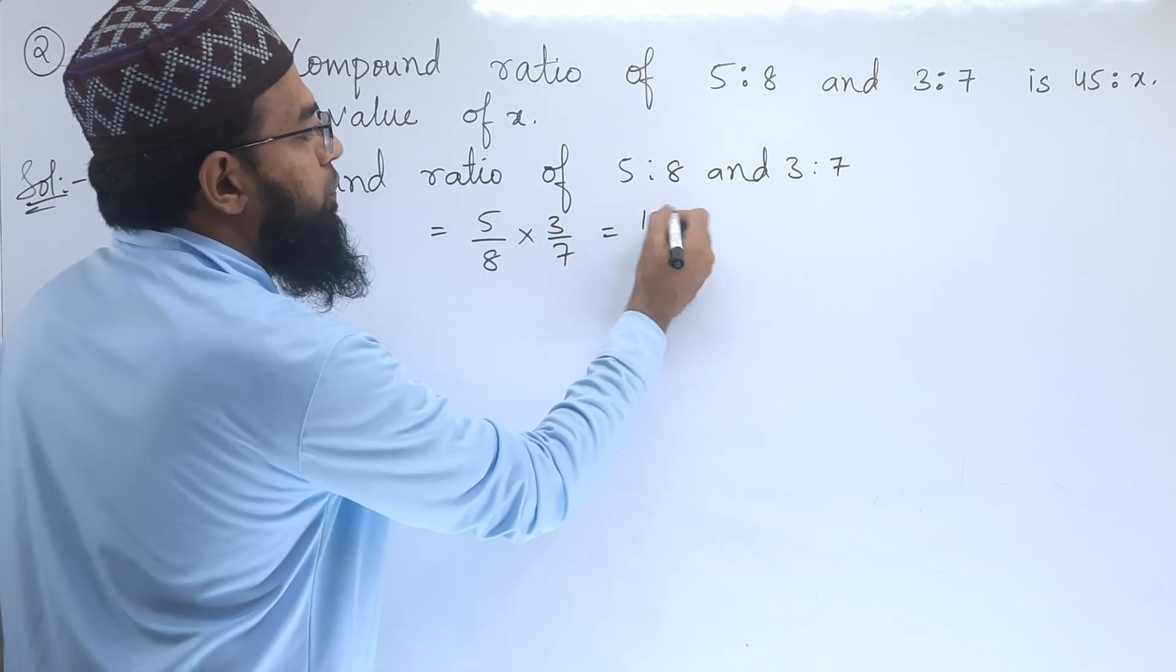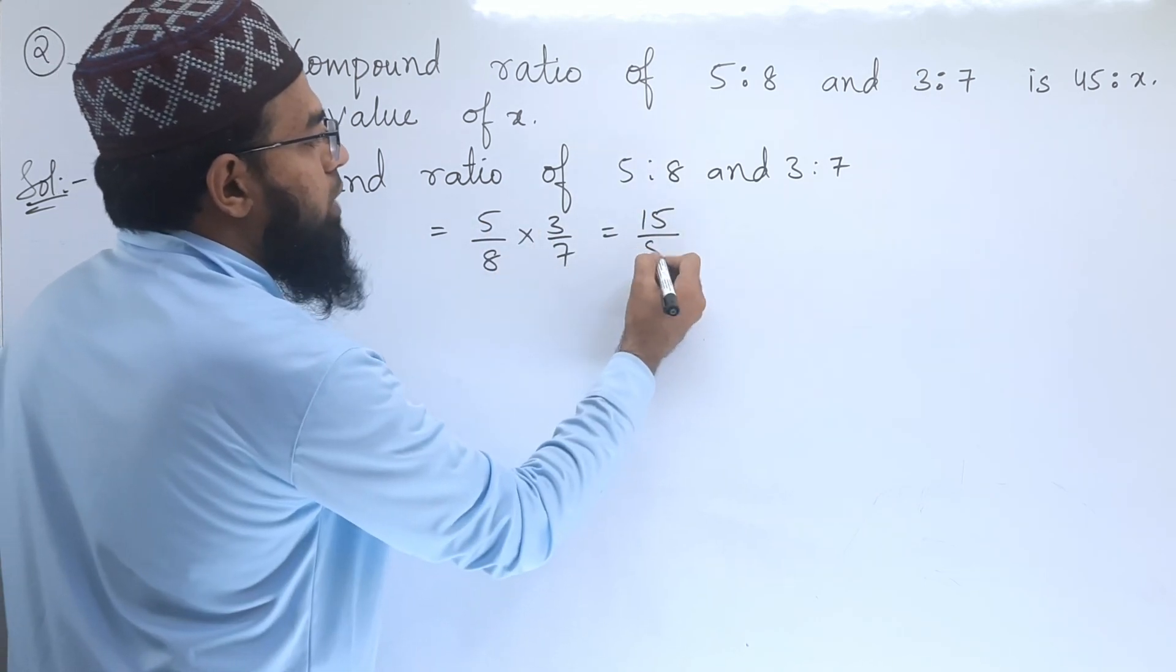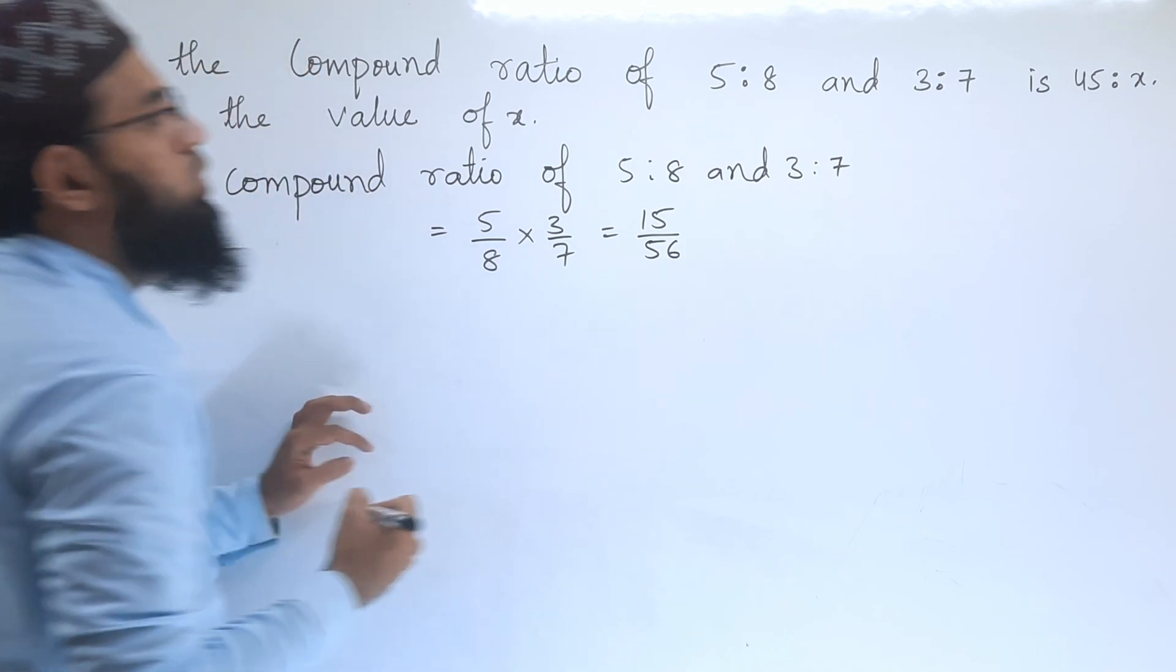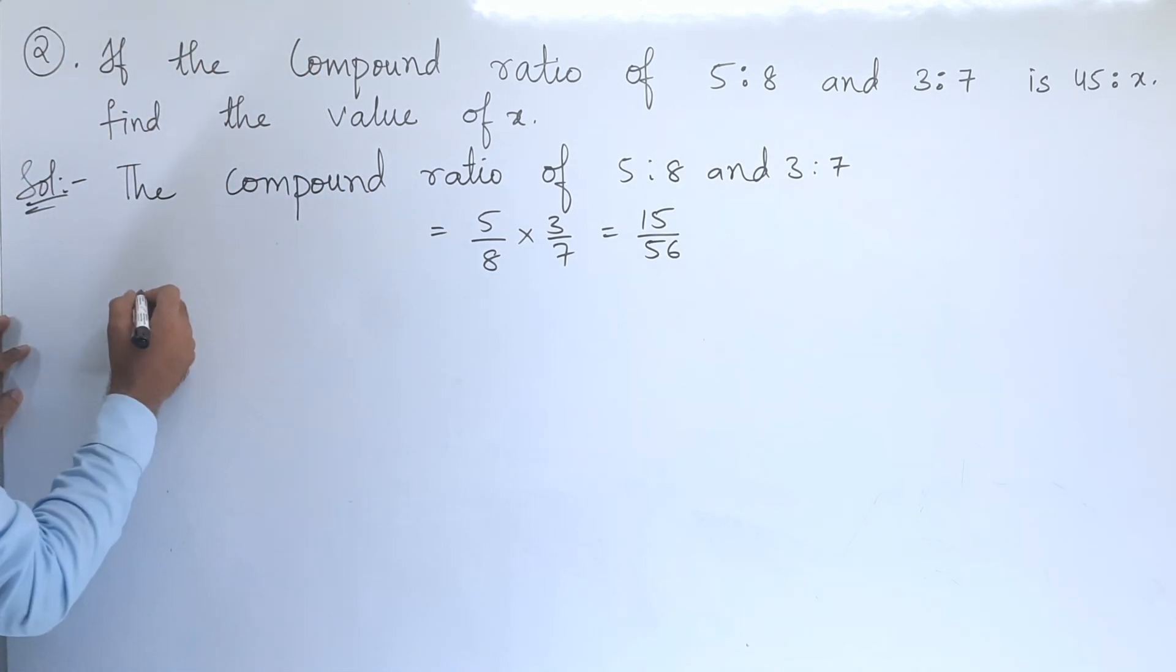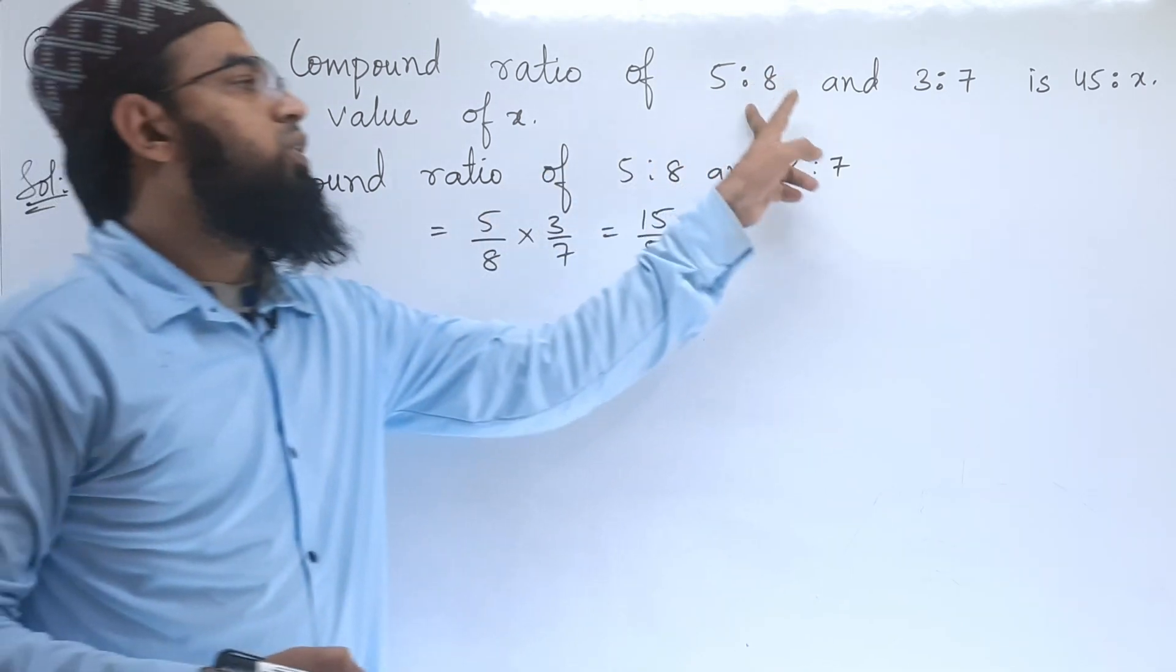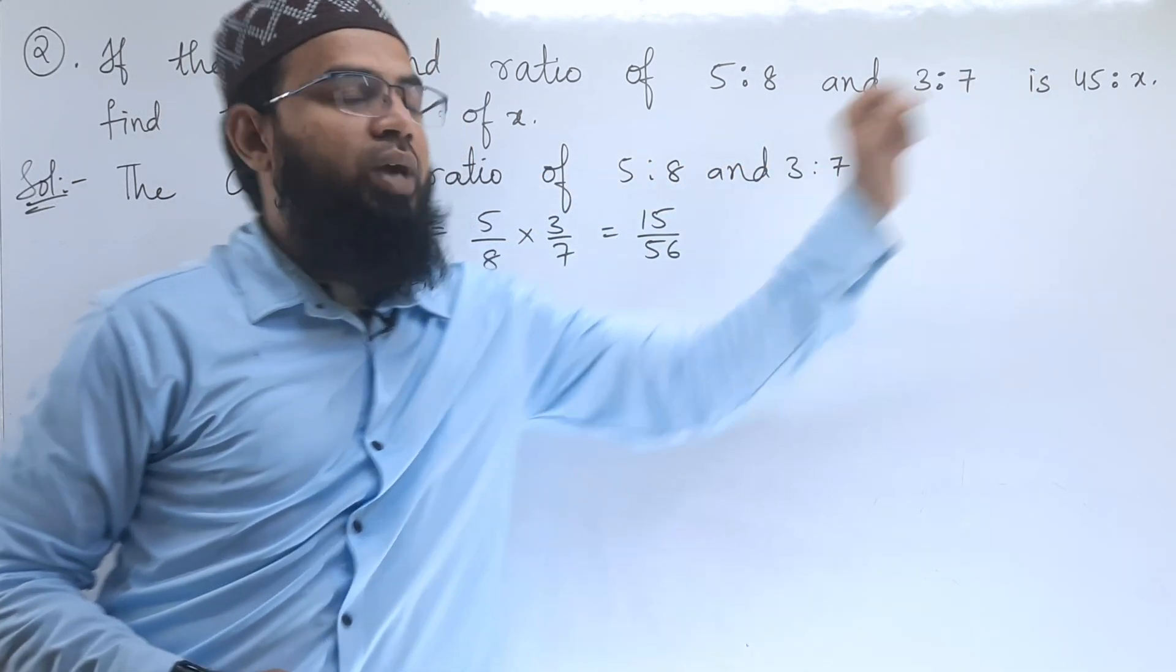According to the problem, the compound ratio of these two is 45:x. So we write 15/56 equals 45/x. Now we will cross multiply.